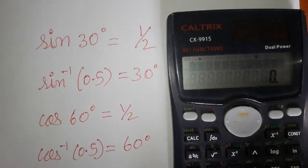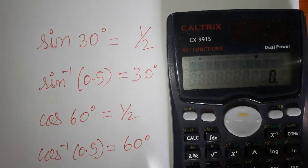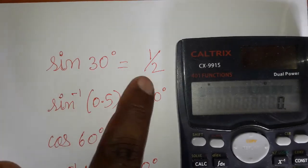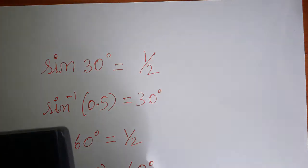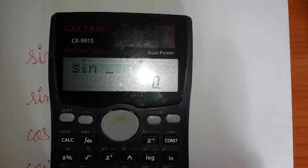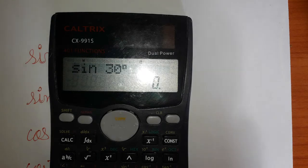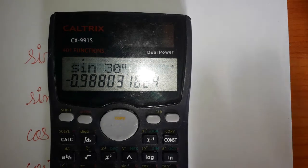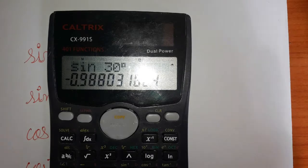In this video I'm going to show you how to fix the calculator when you are getting the wrong reading. See here — I know sine 30 degrees is 0.5, but when I use the calculator I'm getting minus 0.98. I know it's a wrong value, so how to fix the calculator for this kind of problem.